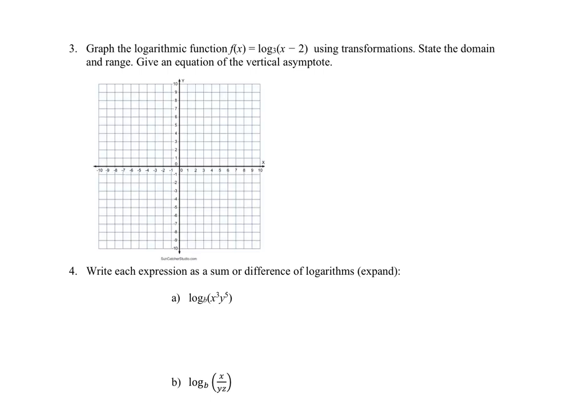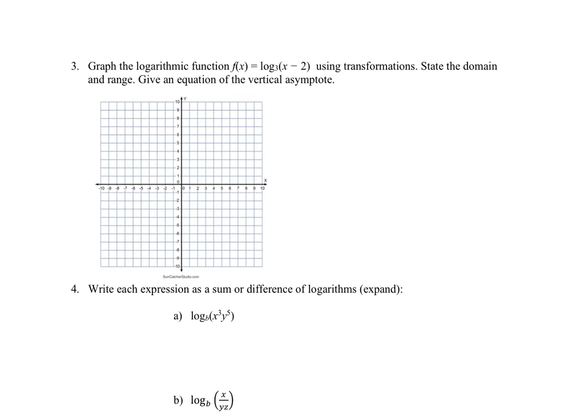Question 3 covers graphing a logarithmic function, also from section 4.1. Unlike exponential functions, logarithmic functions have a restricted domain and a vertical asymptote. The vertical asymptote is normally along the y-axis at x equals 0, unless there's a horizontal transformation. Here, the x minus 2 inside the logarithm translates the graph 2 units to the right, so the vertical asymptote is at x equals 2.